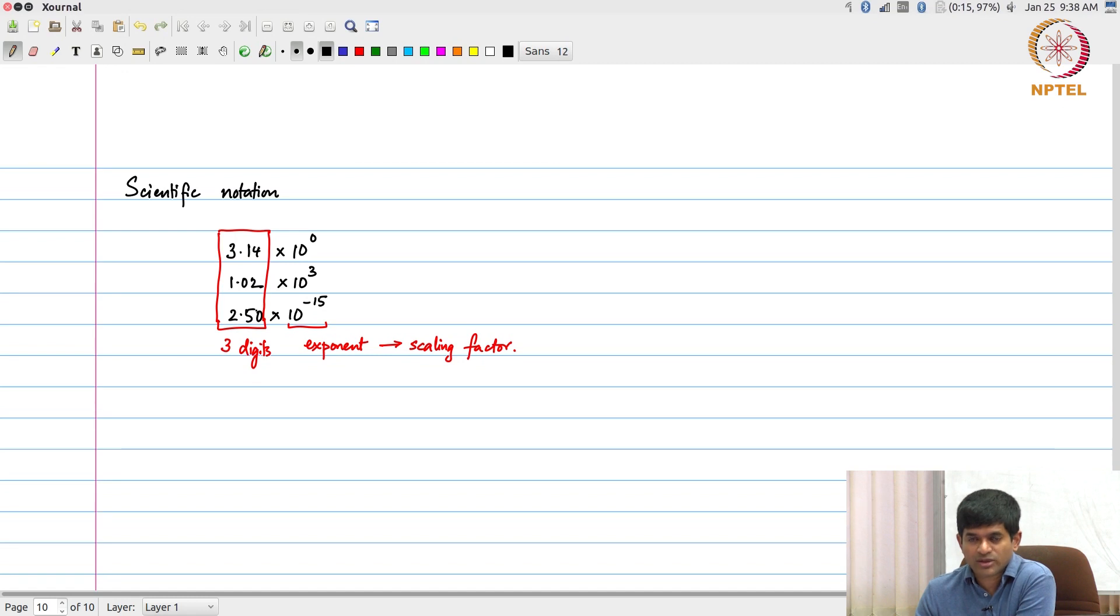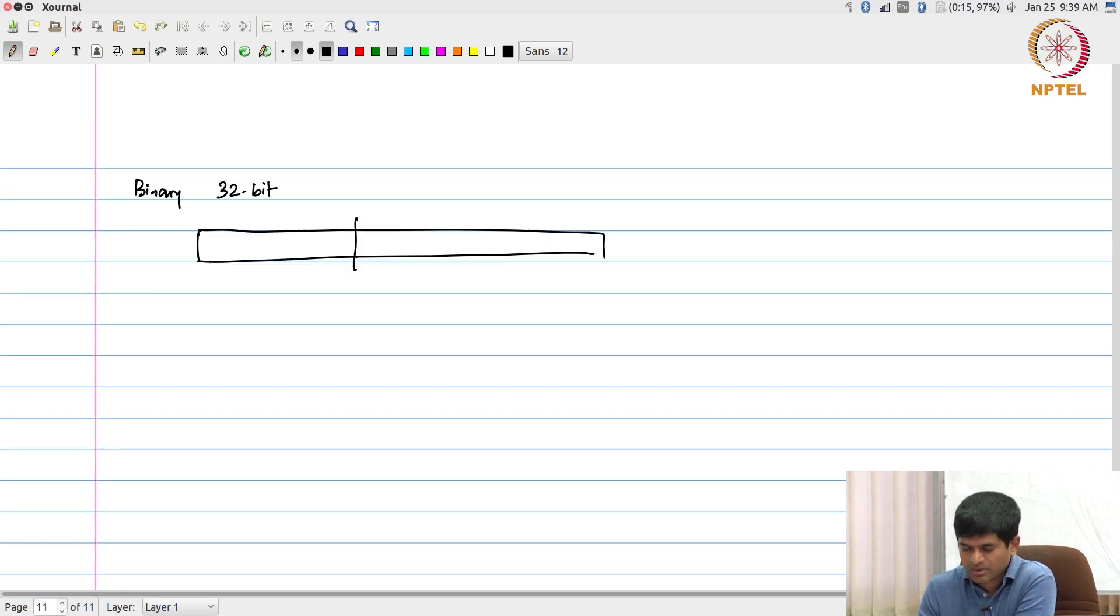I am just going to separate those out. So what was proposed in order to do the same thing for binary was to say, let us say that I have a 32-bit range of values. Let me divide this and say I will have my exponent over here, and the remaining part, which is the actual value, I call it the mantissa.